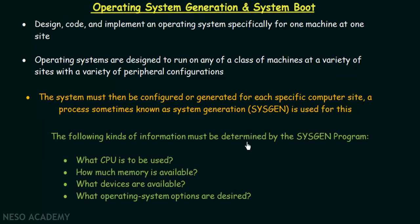The following information must be determined by the sysgen program. First, what CPU is to be used? The sysgen program must find out what processing unit is used in that machine, because there are different kinds of processing units, and depending on that, the operating system has to be generated. Second, how much memory is available? It has to find out how much memory is available in that system to determine if the operating system can be installed and how memory can be allocated efficiently.